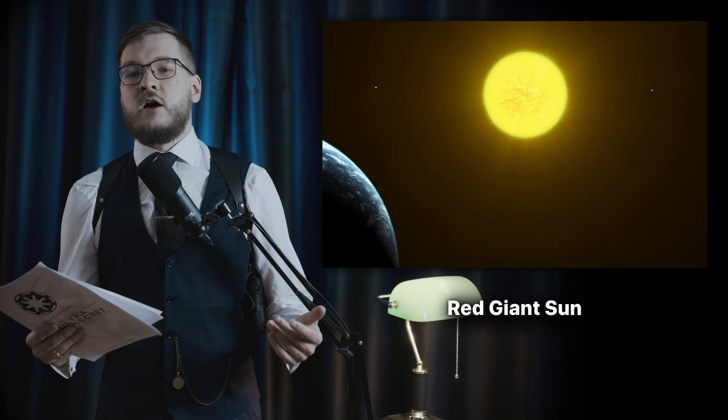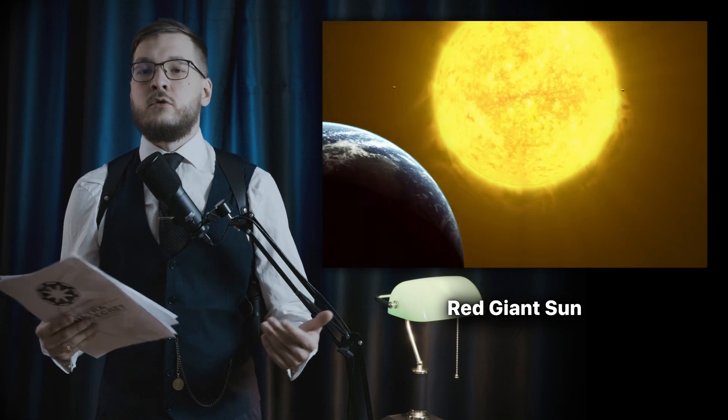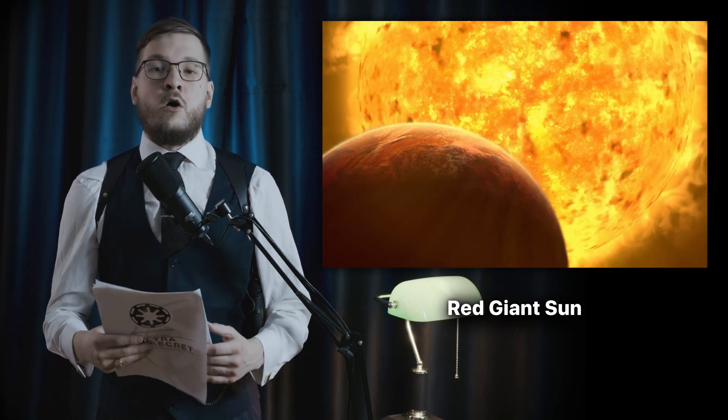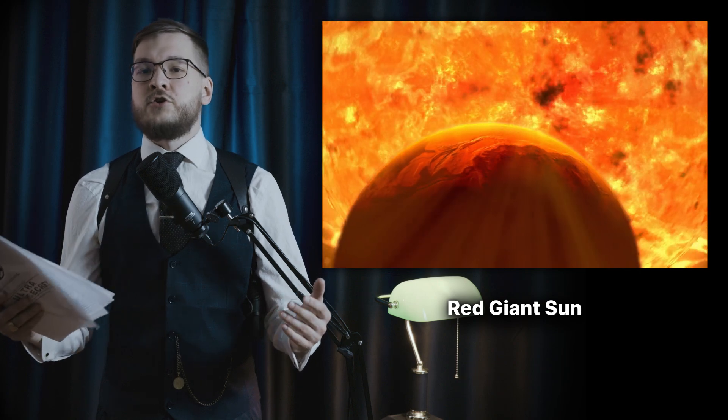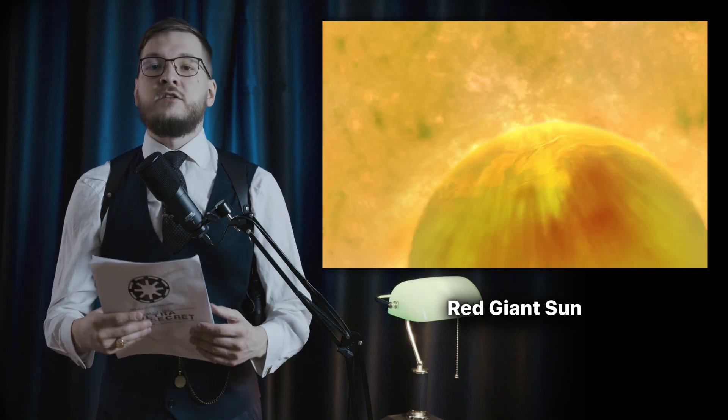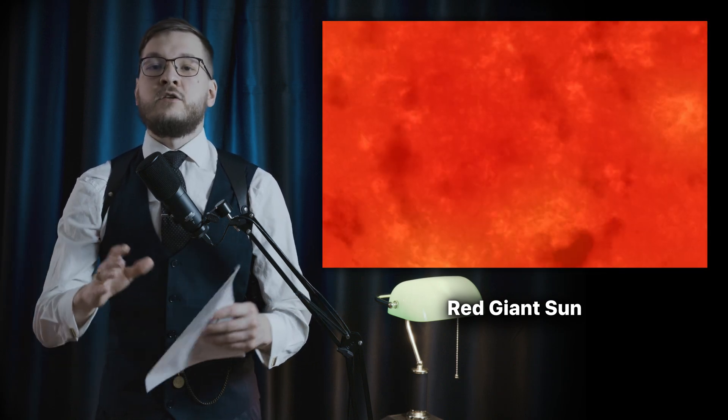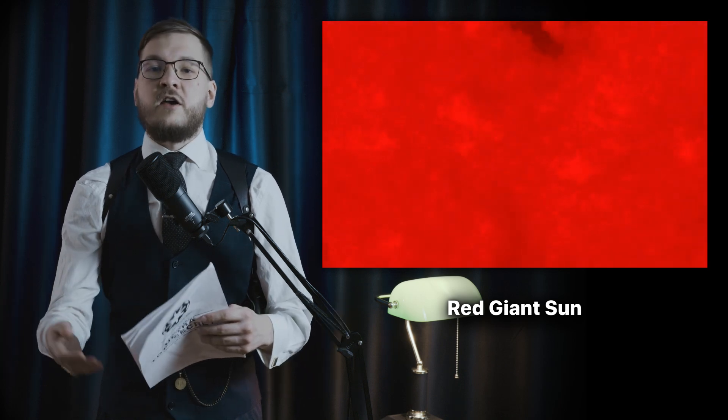When a star like our Sun runs out of hydrogen fuel, it expands into a red giant, often hundreds of times its original radius. Any planets in close orbits should be engulfed and destroyed during this phase.